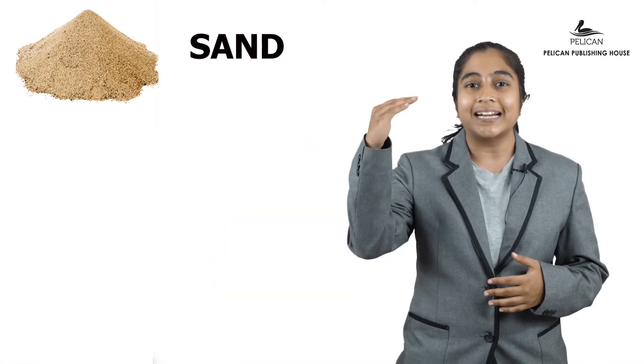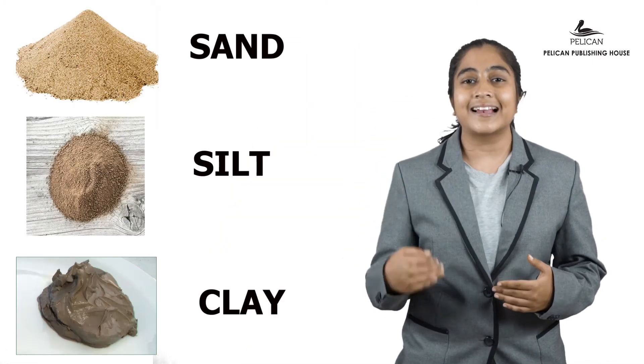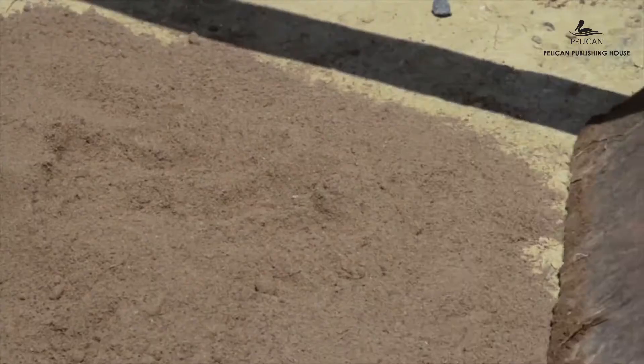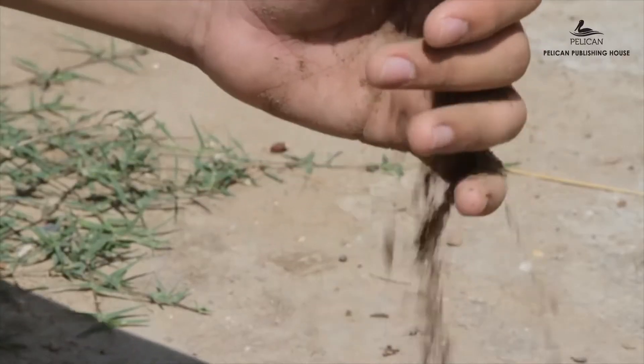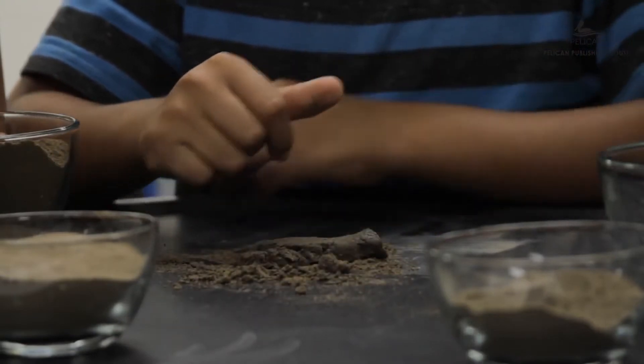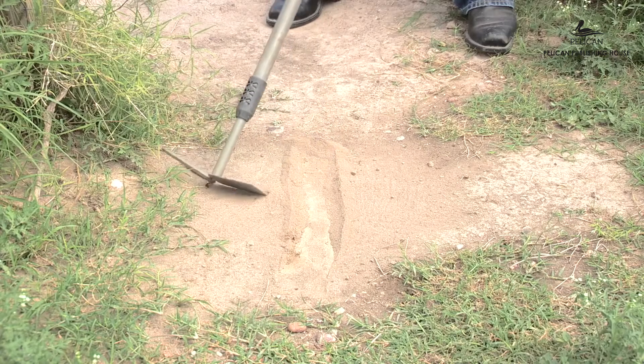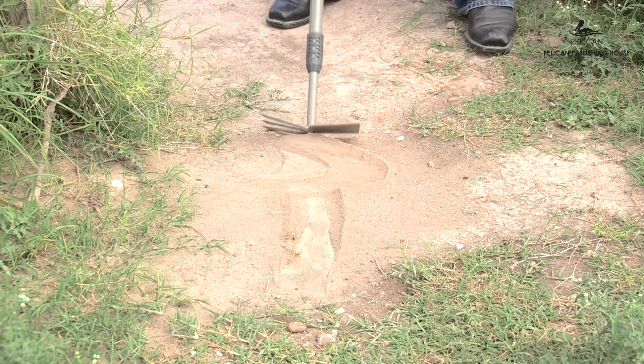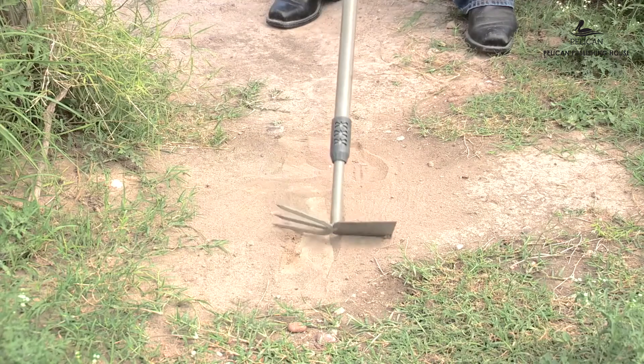Types of soil — as different types of rocks become soil over time, different types of rocks form different types of soil. There are three types of soil. Sand is made of small particles of weathered rock. Sandy soils are very poor at retaining water, so it is very difficult for plants to grow in sandy soil, but this type of soil is very good for making a drainage system.